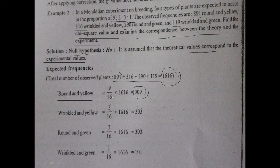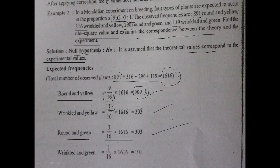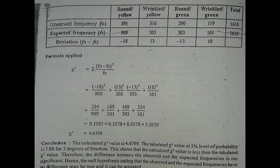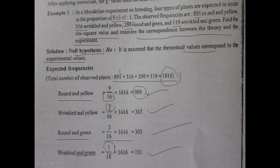From the total of 1616, we calculate expected values for each trait. The ratio 9:3:3:1 has a total of 16 parts. Round yellow: 9/16 × 1616 = 909. Wrinkled yellow: 3/16 × 1616 = 303. Round green: 3/16 × 1616 = 303. Wrinkled green: 1/16 × 1616 = 101. We then place observed and expected frequencies into a table.